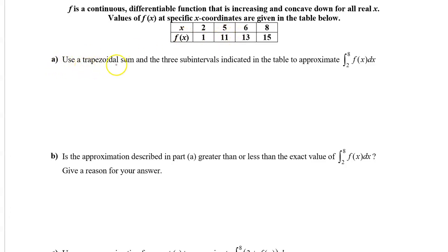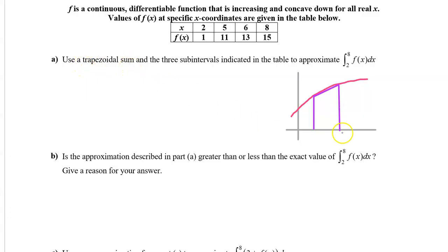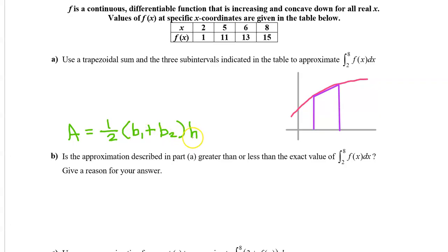Part A: use a trapezoidal sum and the three subintervals indicated in the table to approximate the integral of f of x from 2 to 8. A trapezoidal sum means that we are using sideways trapezoids to estimate the area under the curve. The formula for the area of a trapezoid is one half times (base 1 plus base 2) times height. For a sideways trapezoid, base 1 is on the left, base 2 is on the right, and the height is the width of the trapezoid.